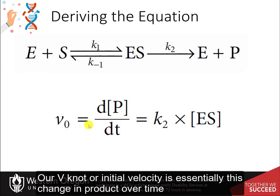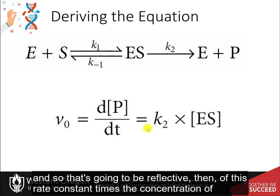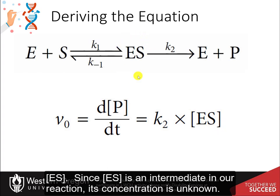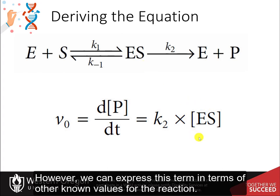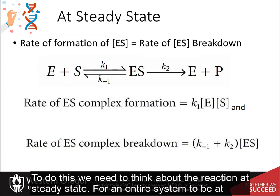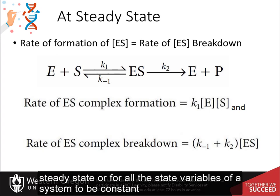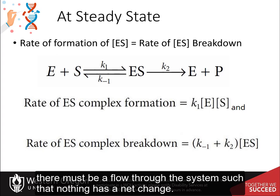Our V0, or initial velocity, is essentially the change in product over time, and so that's going to be reflective of this rate constant times the concentration of ES. Since ES is an intermediate in our reaction, its concentration is unknown. However, we can express this term in terms of other known values for the reaction. To do this, we need to think about the reaction at steady state. For an entire system to be at steady state, all the state variables of a system must be constant, with a flow through the system such that nothing has a net change.